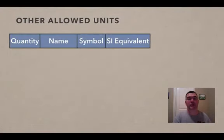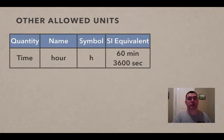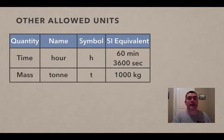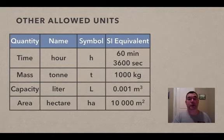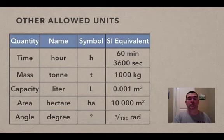Okay. So other allowed units are used by combining or expanding on some of the units that we already talked about. So time can be measured in hours, which is 60 minutes or 3,600 seconds. Mass can be measured in tons. Each ton is 1,000 kilograms. Capacity can be measured in liters, and each liter is 0.001 cubic meter. Area can be measured in hectares, which is 10,000 square meters. And angles can also be measured in degrees, which is what I think you're used to.